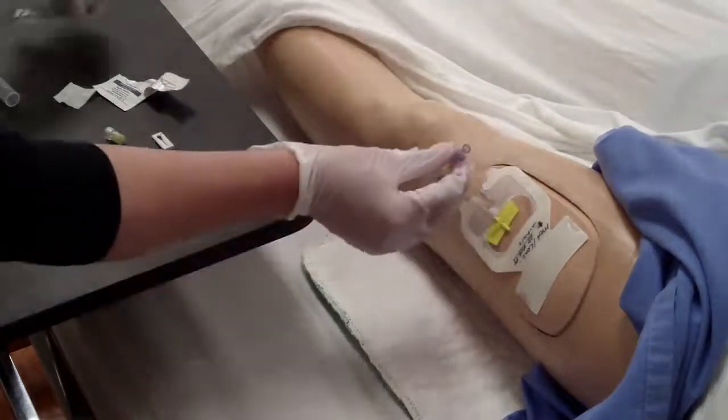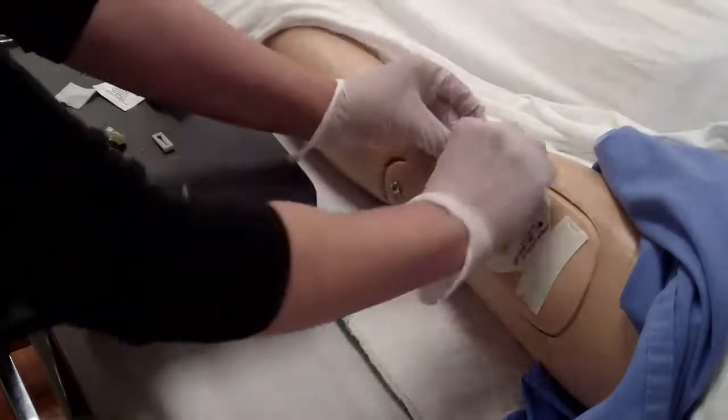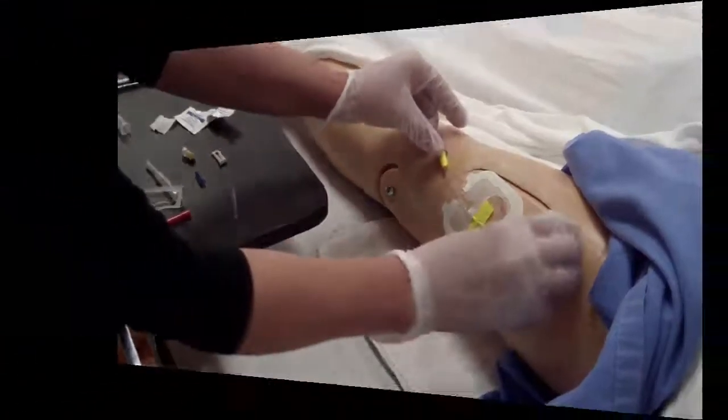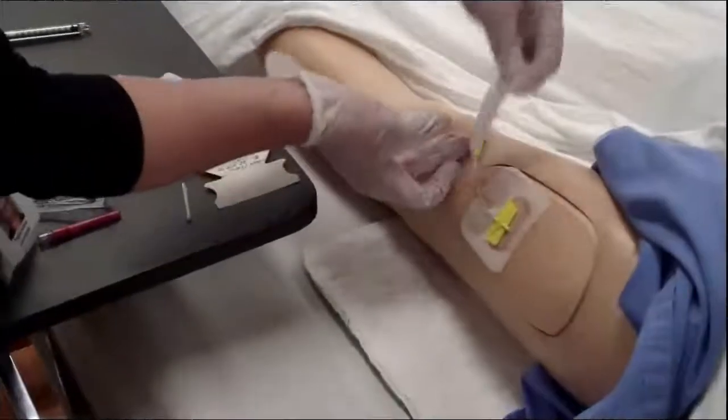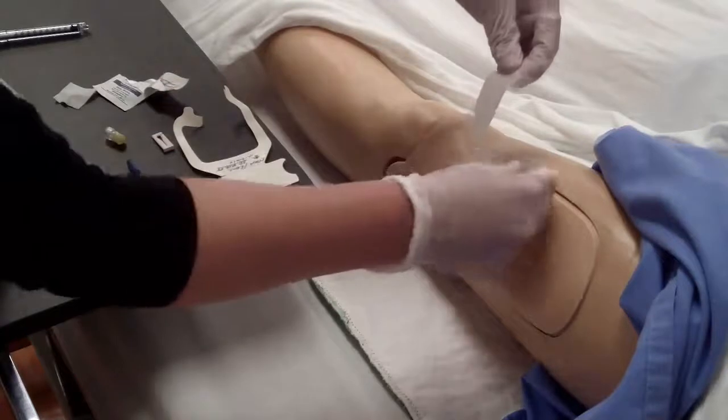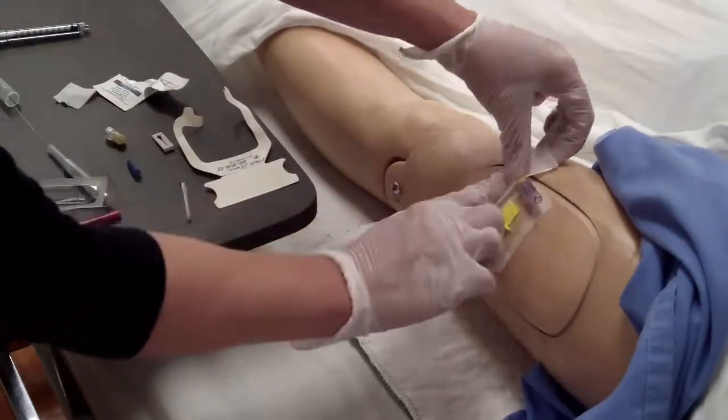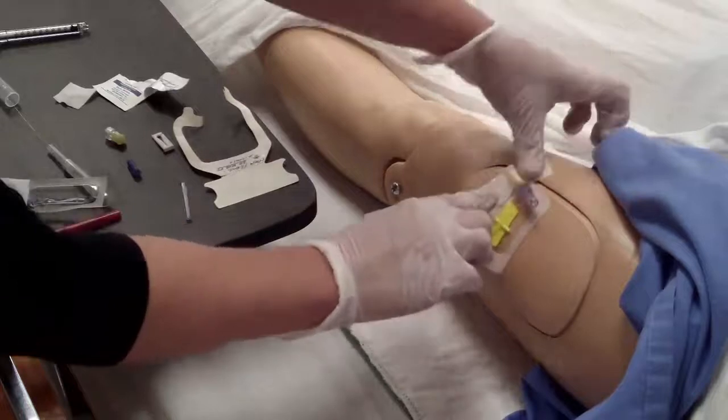When you have administered the medication, you can remove the syringe. Remove the rest of the backing from the dressing and use the tape provided on the dressing to secure the line.